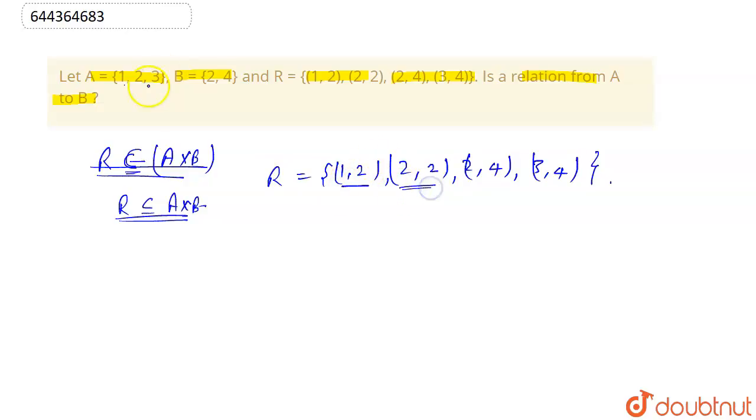(2,4) - 2,4 so this is also a valid element. And (3,4) - that is this, this, so this is also a valid element. This means all these elements are subset of A cross B, so this is a valid relation.